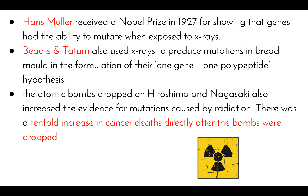Hans Muller received a Nobel Prize in 1927 for showing that genes had the ability to mutate when exposed to x-rays.